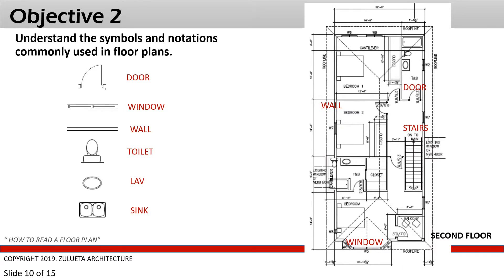This is the second floor plan. Starting from the bottom, you can see a bay window. Further up, you can see the stairs, which indicate you can go down to the main floor from this end. On the left side of the floor plan is the wall of bedroom number two, along with a door symbol. That door leads to the washroom on the second floor, which contains a toilet, a lavatory, and at the far end, a symbol for a tub.